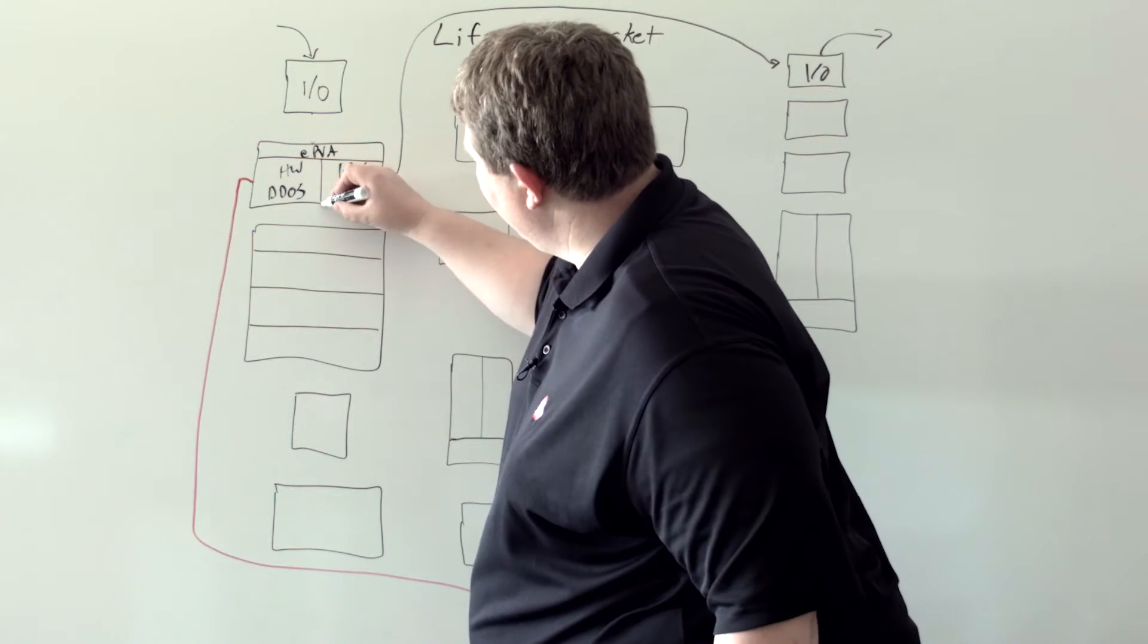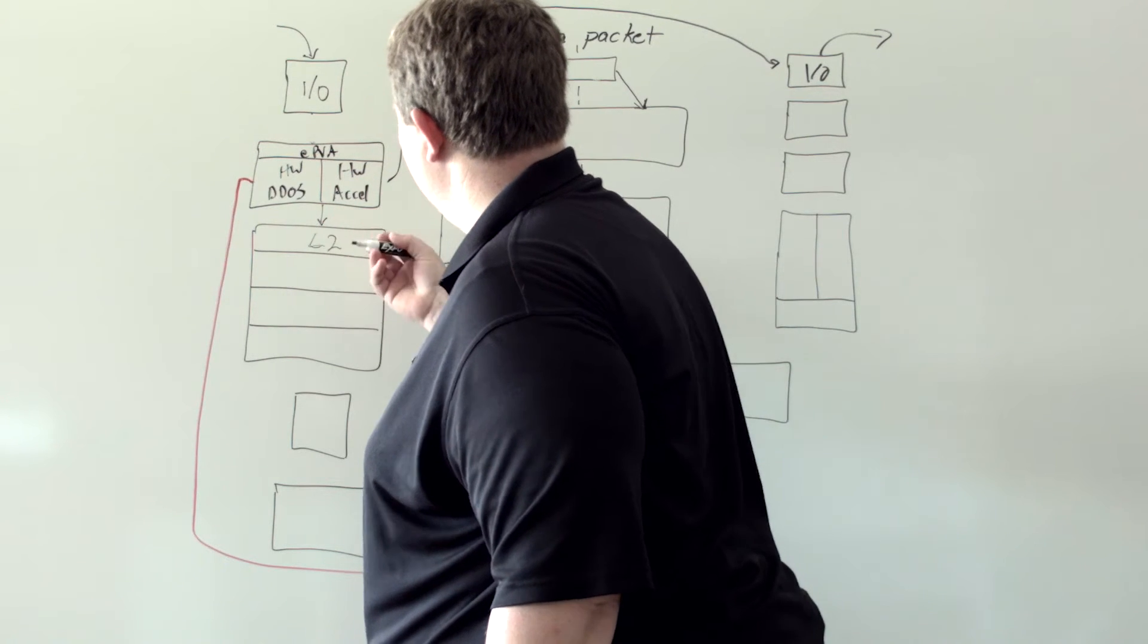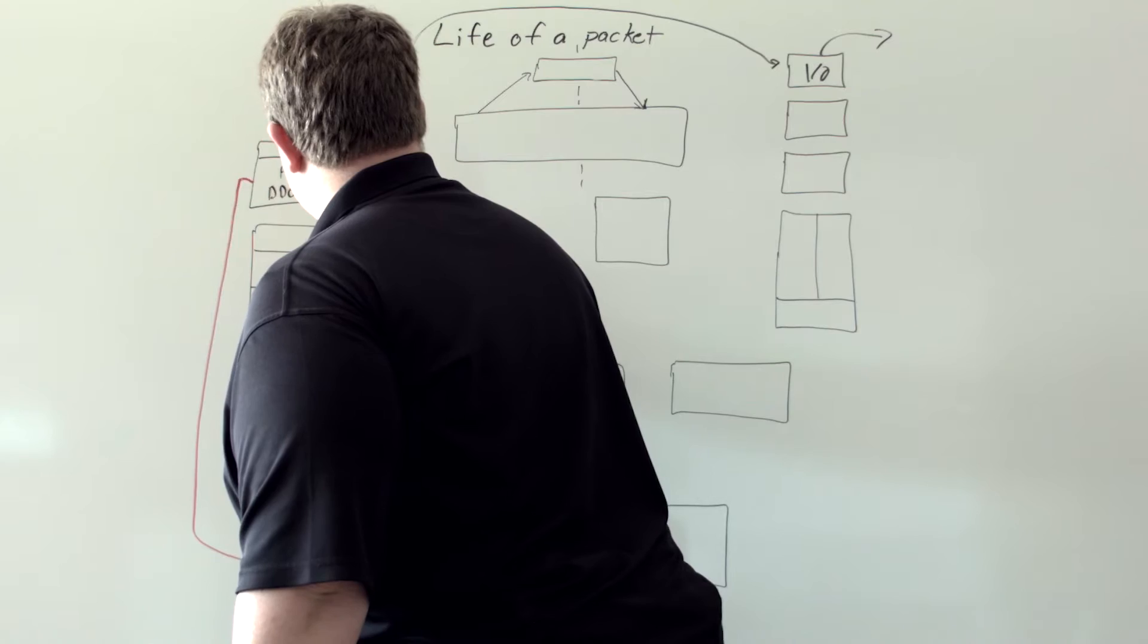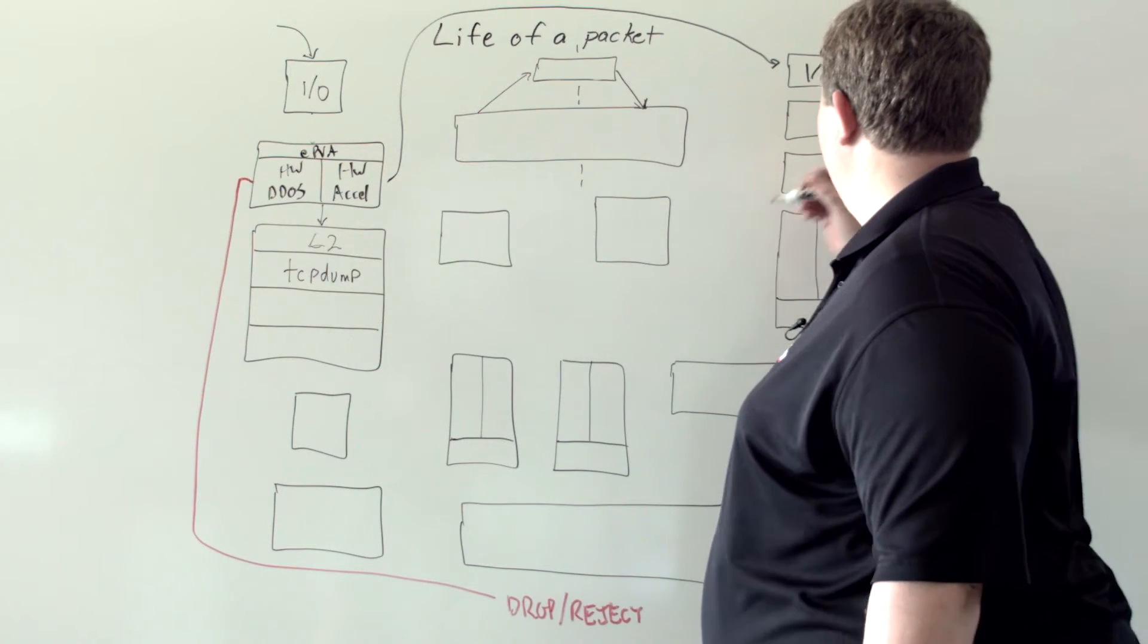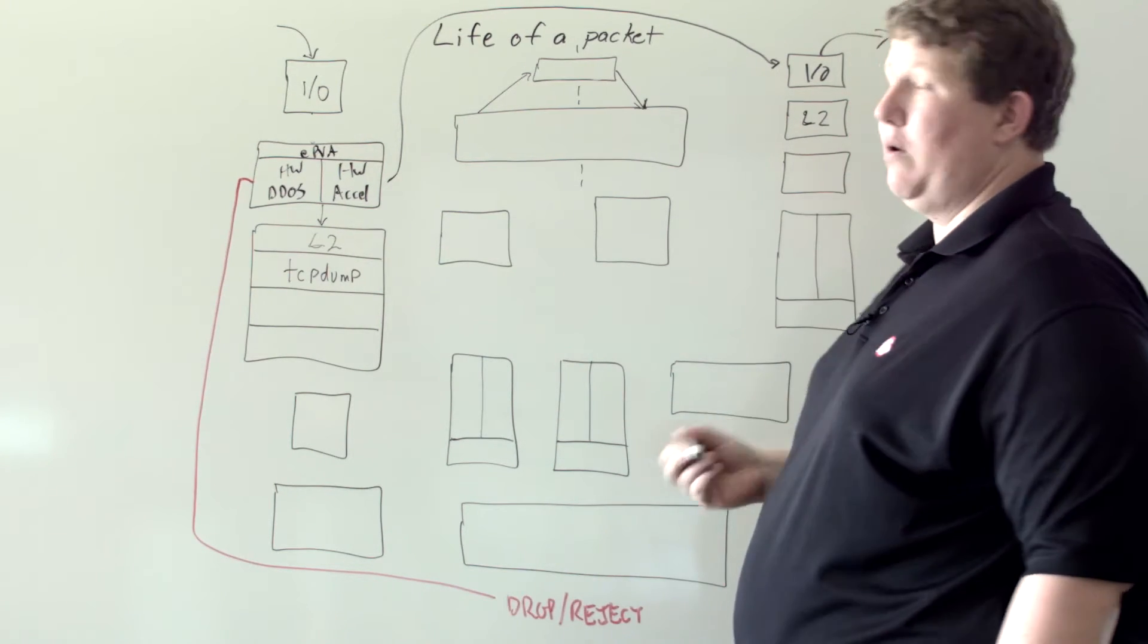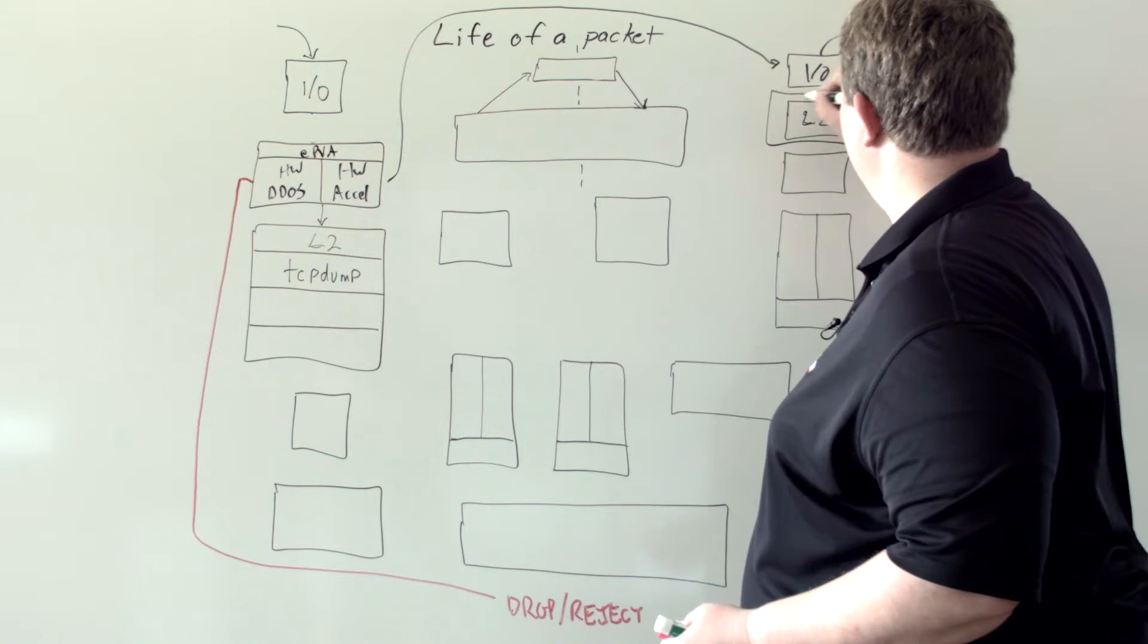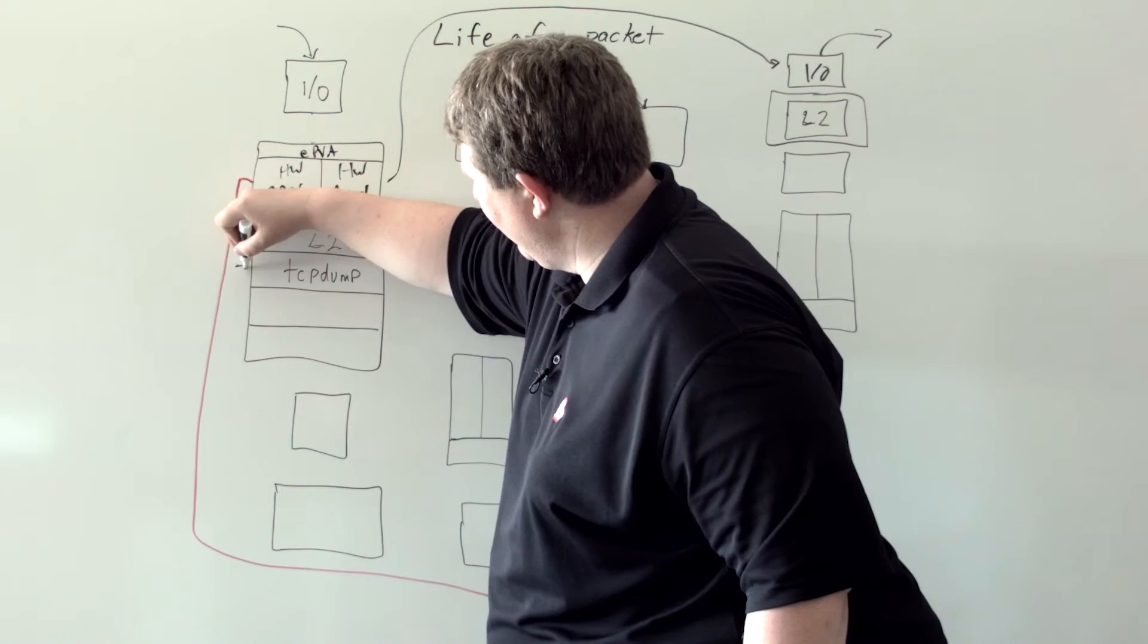After that, we're going to drop down here to layer 2. This is where your TCP dumps are occurring. Anytime you're taking a TCP dump, that's happening here. Layer 2 over here. On the way in or on the way out, TCP dump is happening here, right here at layer 2.